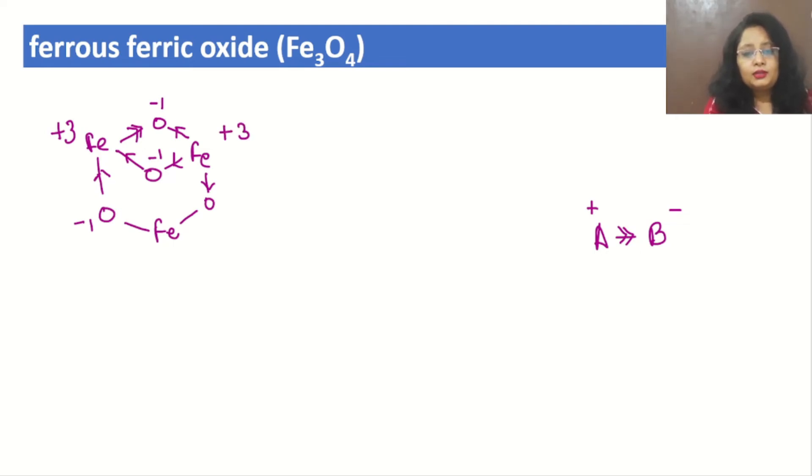Now come to this last iron. Here we can see only 2 bonds are there with the oxygen. It means 2 times electrons are pulling, so +1 from here and +1 from here, which means total +2 charge.